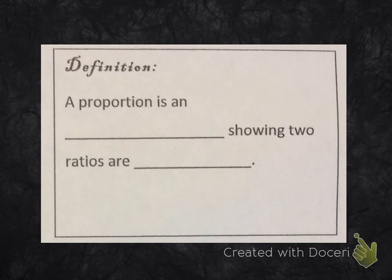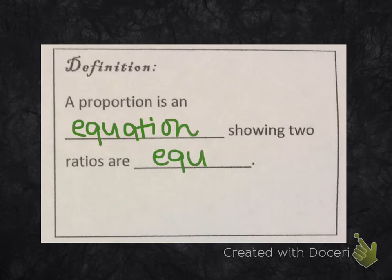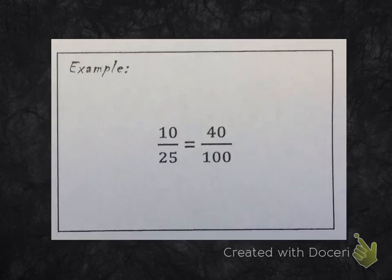A proportion is an equation showing two ratios are equal. For example, 10/25 equals 41/100. This is a proportion showing that two ratios are equal. So a proportion is an equation showing two ratios are equal. Here's an example of a proportion.